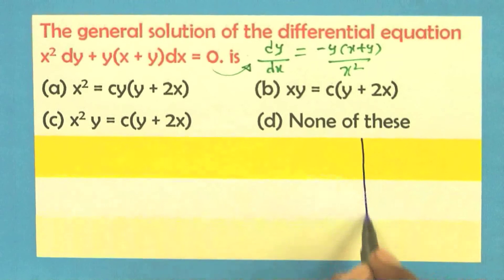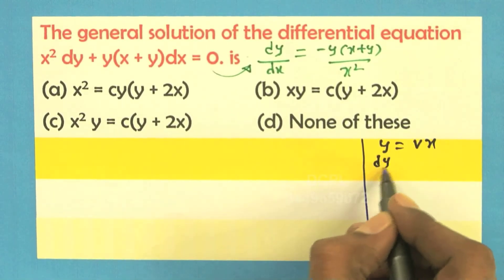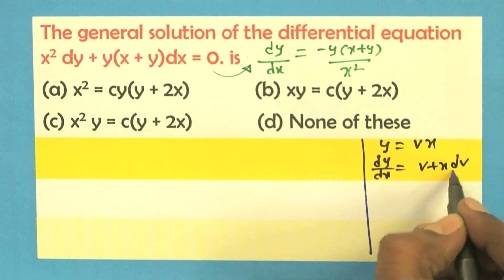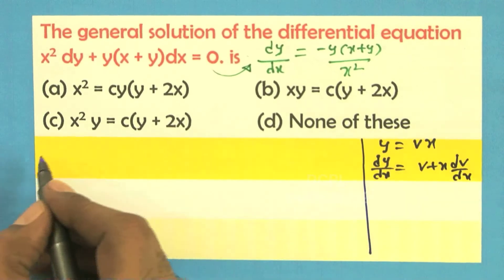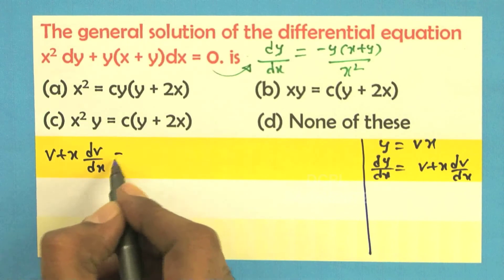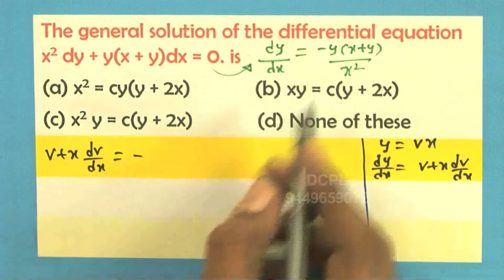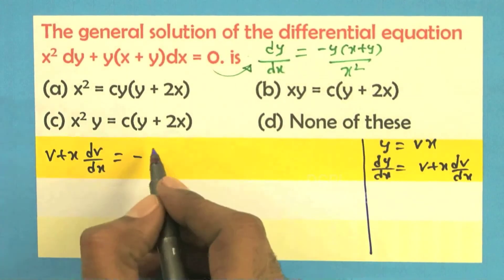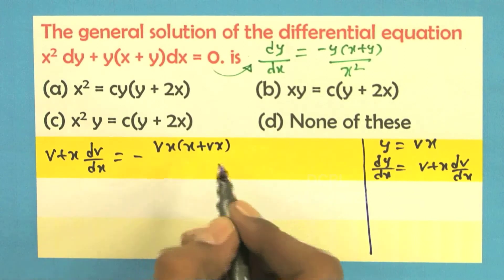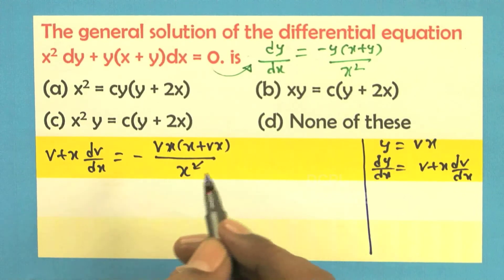Put y is equal to vx, so dy by dx is equal to v plus x into dv by dx. Therefore, v plus x into dv by dx is equal to minus vx into x plus vx, divided by x squared. x squared cancels.